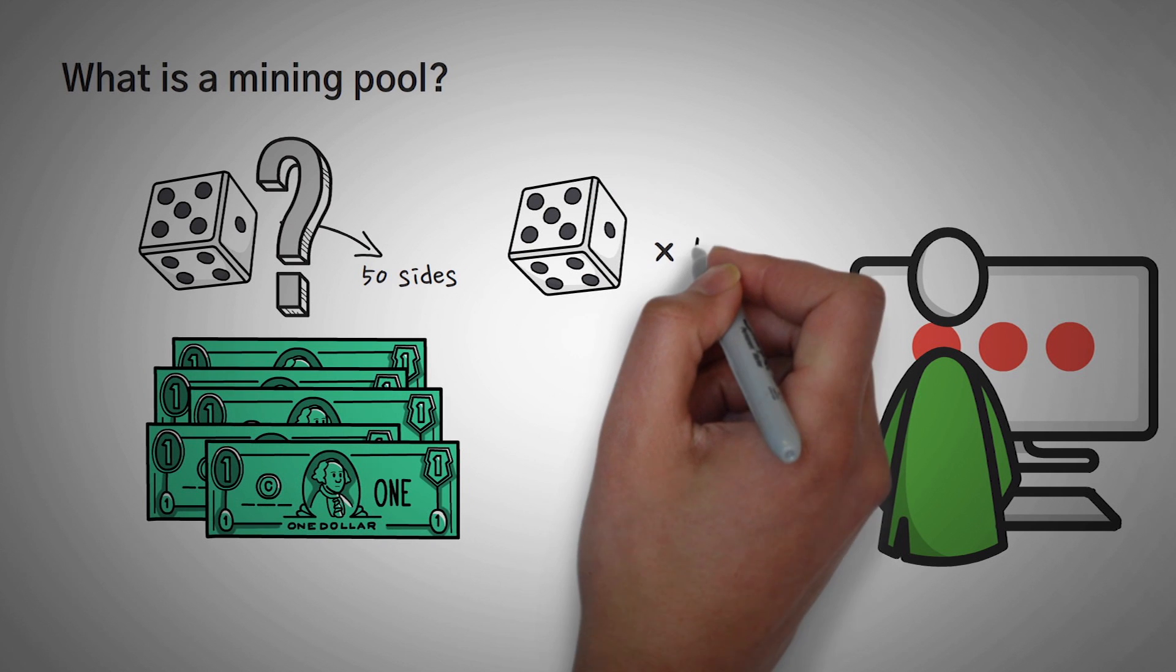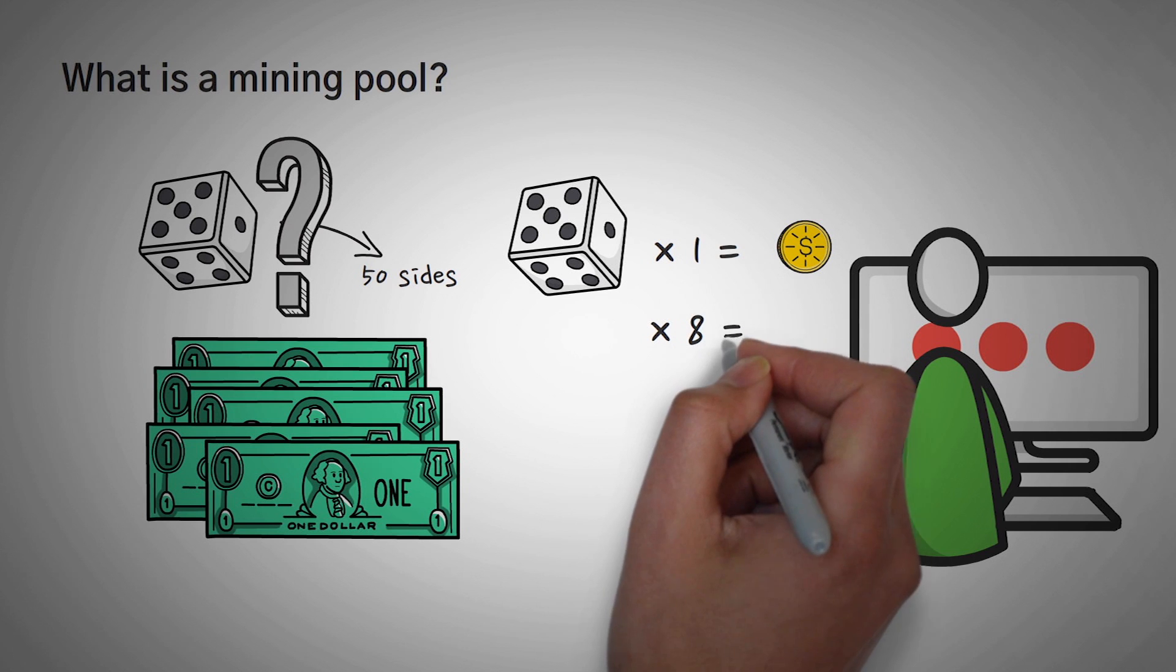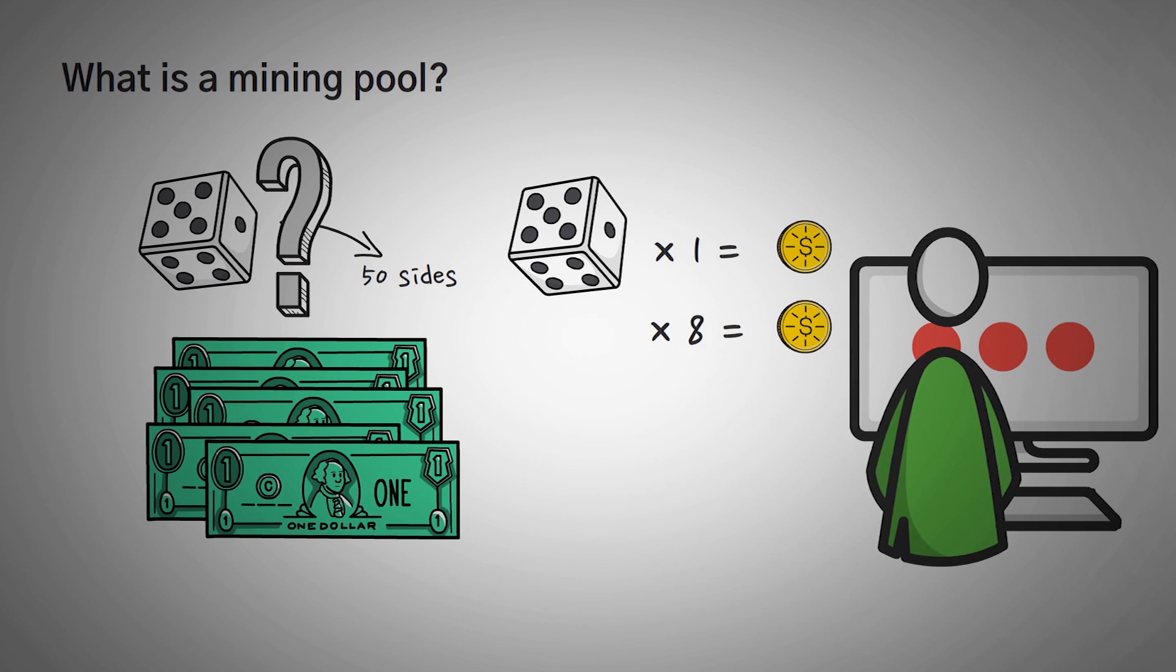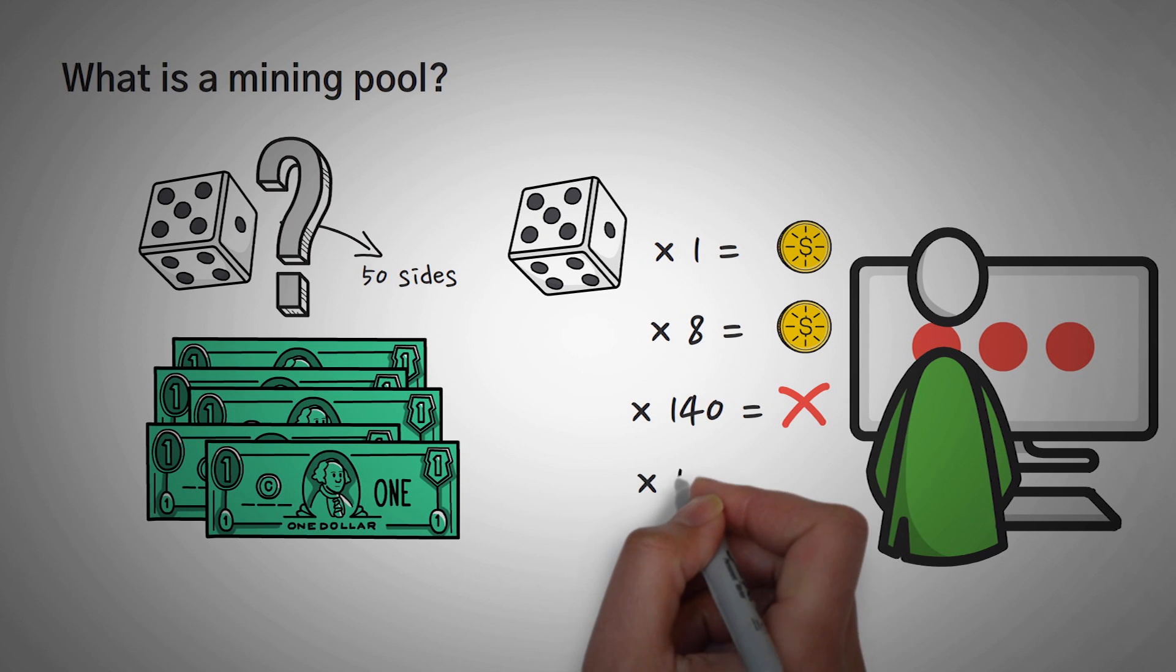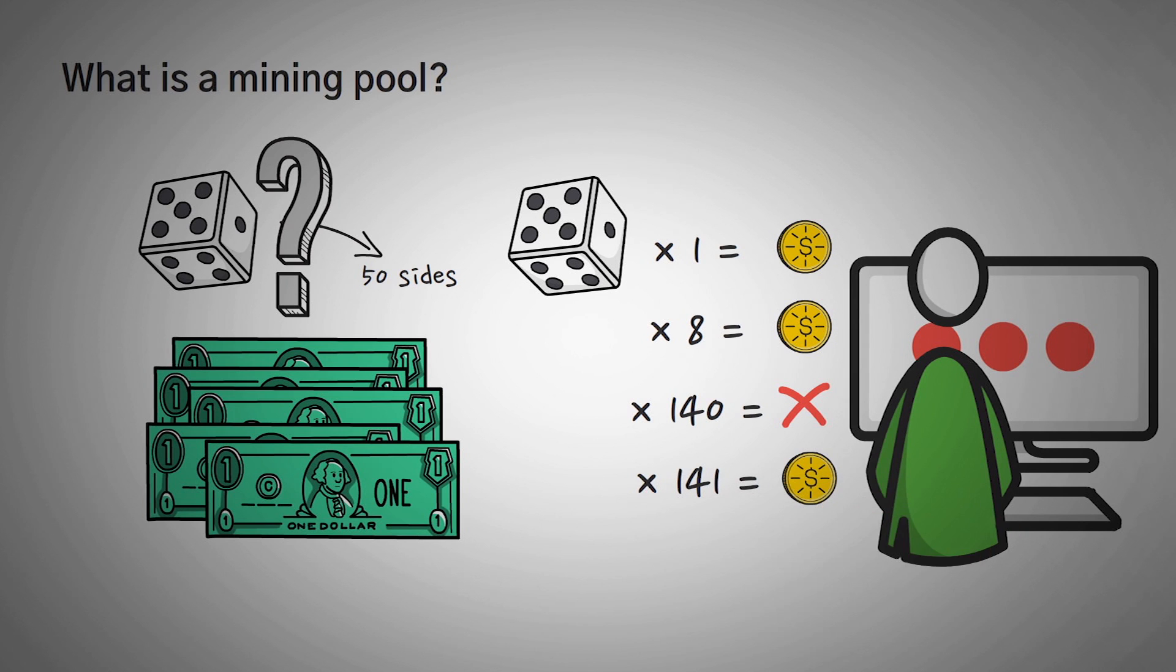However, you could roll it once, get paid, you might have to roll it eight more times until you hit that magical square again, get paid again, and then you might have to roll it 140 times without hitting the magical side until you rolled it the 141st time and then got paid.